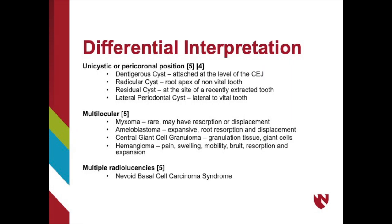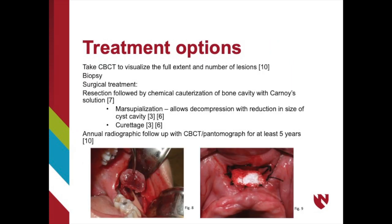If there are multiple radiolucencies, you'll want to consider nevoid basal cell carcinoma syndrome or Gorlin syndrome. Once you have considered the OKC as a potential lesion, you'll want to take a CBCT scan to visualize the full extent and number of lesions. After verifying that it's an OKC, biopsy and surgical treatment follow. Surgical treatment involves resection followed by chemical cauterization of the cavity with Carnoy's solution, marsupialization to allow reduction in size of the cavity, and curettage to verify full removal. Due to the high recurrence rate, follow up annually with a CBCT scan or pantomograph for at least five years.